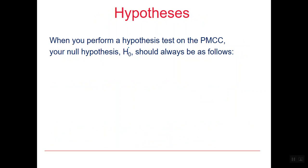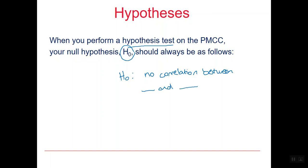When you perform a hypothesis test on the PMCC you need to have a null hypothesis, which we write as H0. You can either write it as: H0 is that there is no correlation between the two variables, or you could write that H0 is that rho equals zero. Remember, rho stands for the population correlation coefficient.